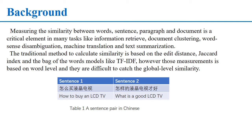For example, there are two sentences in Table 1: '怎么买液晶电视?' and '怎么买液晶电视才好?' The English translations are 'How to buy an LCD TV' and 'What is a good LCD TV.' From the word level, they look the same. However, the thematic information is totally different.